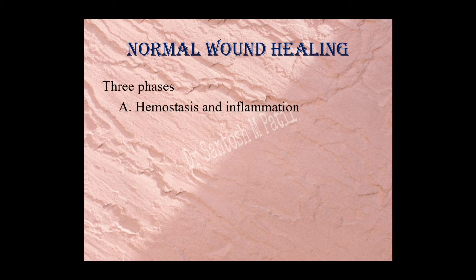There are basically three phases of wound healing. The first phase is hemostasis and inflammation. Whenever there is an injury to the body, to prevent further injury, the body starts a process of hemostasis — that is, initial vasoconstriction followed by aggregation of the platelets, which leads to hemostasis to prevent further blood loss.